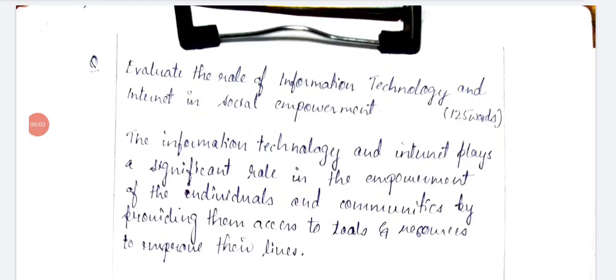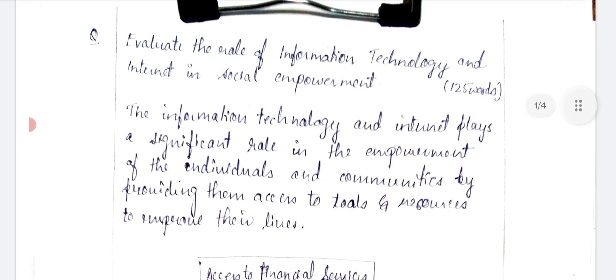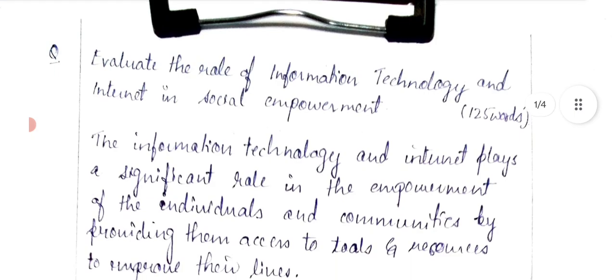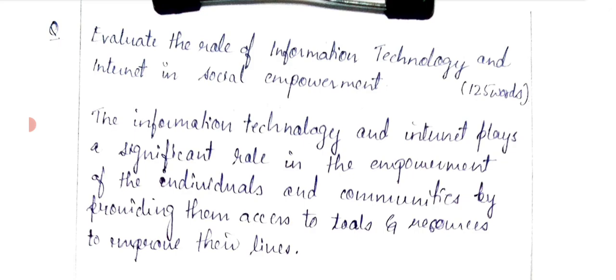Hello class, I am Abhishek and in our continued series of UPPCS GS Mains Paper 1 — Society and other related issues — I'll present another solved question from UPPCS 2022 Mains. The question is: what is the role of information technology and internet in social empowerment? This is perhaps the simplest question you can expect in Mains. The three keywords are: information technology, internet, and social empowerment.